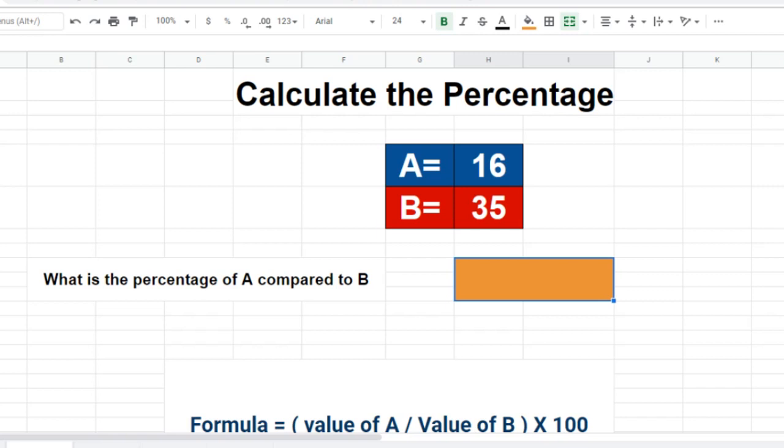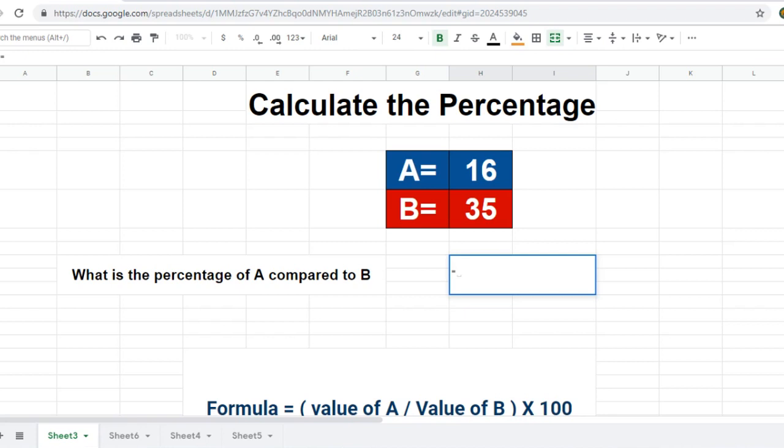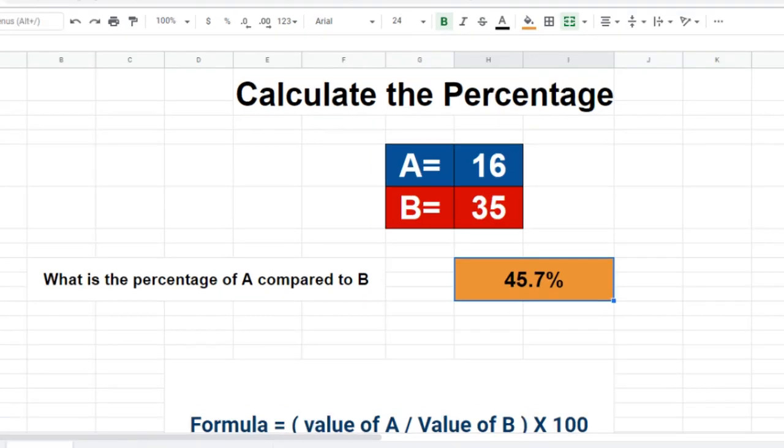Here is the formula to solve the problem. Formula equals value of A divided by value of B, then multiply by 100. So let's apply this formula in the answer section. And the answer is 45.7%.